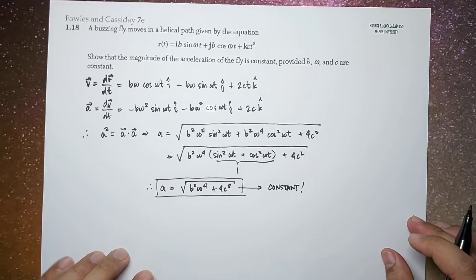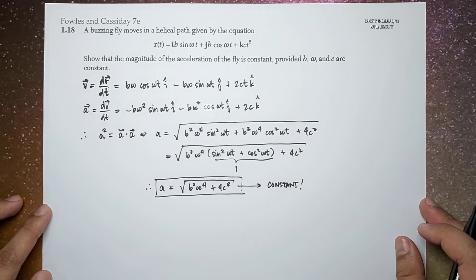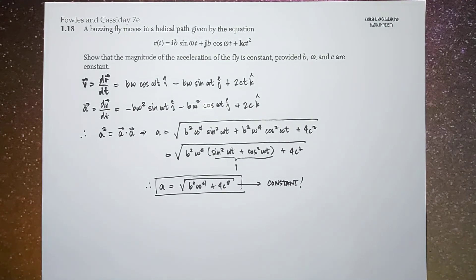Okay, so that's it. That's problem 1.18 of Fowles and Cassidy. So I hope you learned something today. Thank you for watching, and I'll see you guys in the next video.